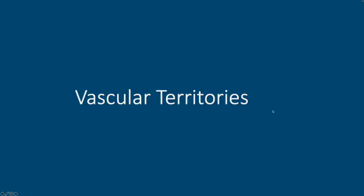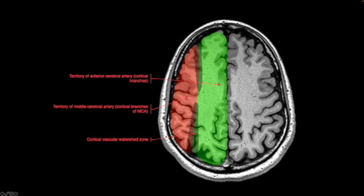Now that we've reviewed that, we want to look at the vascular territories in the brain. These are some colored schematics that are overlaid on a T1-weighted MRI axial sequence from the brain, and we'll kind of start and go from top to bottom. This is a slice through the cerebral hemispheres above the level of the ventricles. This green territory is the territory supplied by the anterior cerebral arteries.